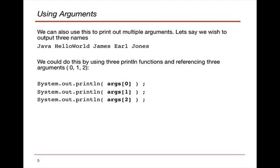We'd say system.out.println, or print line, args bracket zero, and then do it again, args bracket one and args bracket two. And each one would reference, James would reference the zero, Earl is referenced by the one, and Jones is referenced by the two.